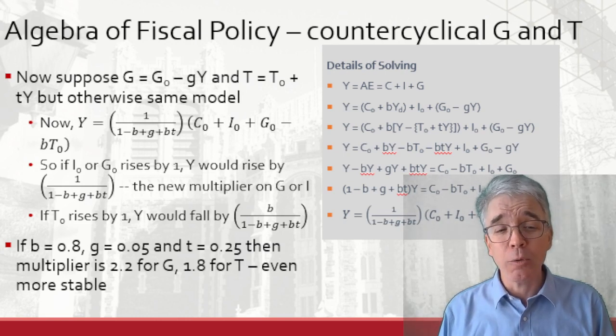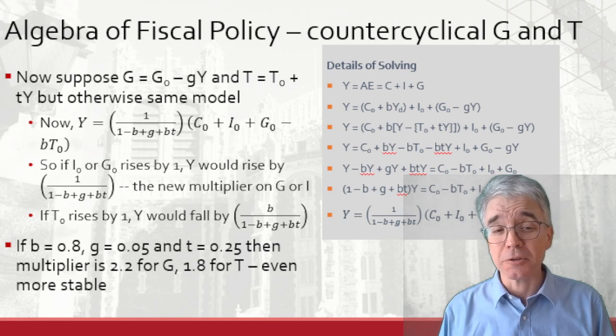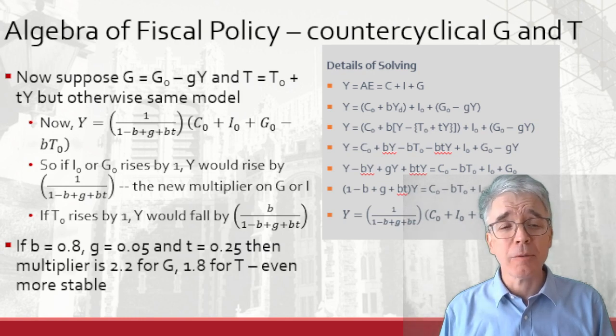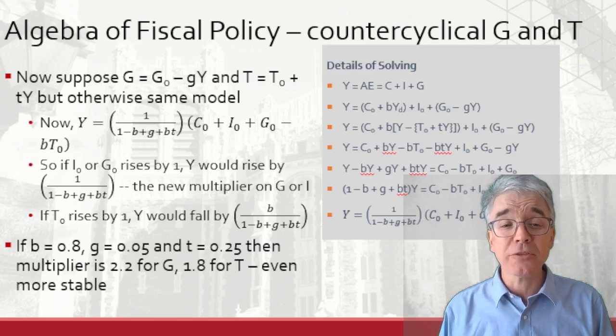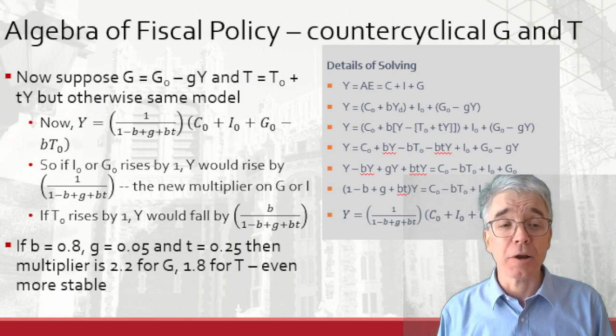Now when you collect terms, there's a BYT term, where the B, the marginal propensity to consume, multiplies by the tax rate, little t, since people's consumption decisions depend on disposable income, which is income after tax. Now the multiplier is 1 over 1 minus B plus G plus BT, which all combine to make the multiplier even smaller.